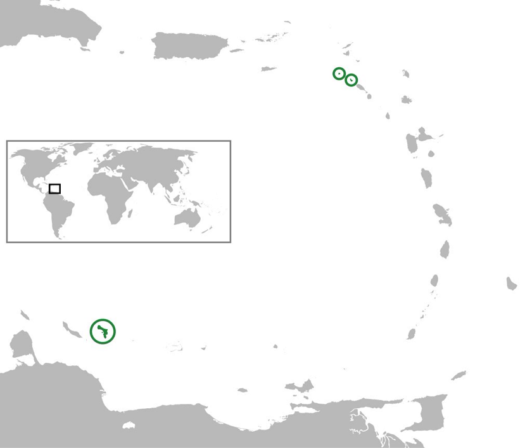The Caribbean Netherlands form part of the Lesser Antilles. Within this island group, Bonaire is part of the ABC Islands within the Leeward Antilles island chain off the Venezuelan coast. The Leeward Antilles have a mixed volcanic and coral origin. Saba and Sint Eustatius are part of the SSS Islands and are located east of Puerto Rico and the Virgin Islands.